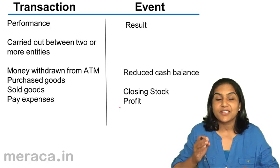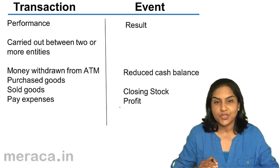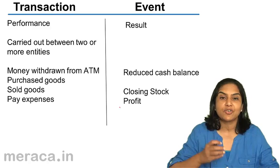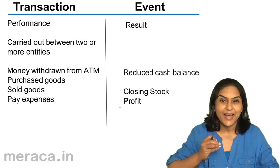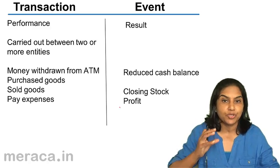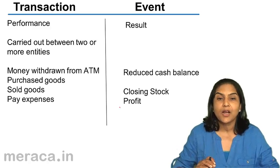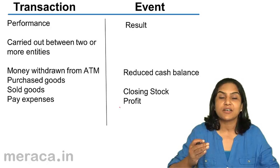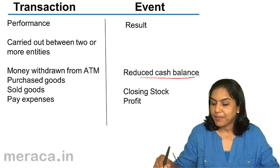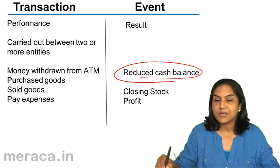What is the result of this event of withdrawing? The transaction was withdrawing — the performance of the act was withdrawing money. What is the result of this event? The bank balance comes down.